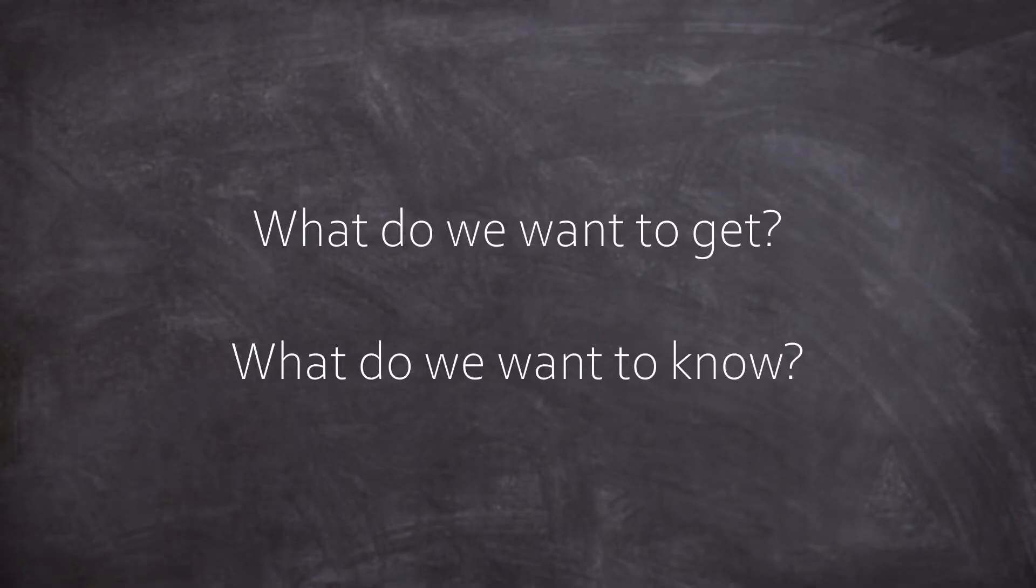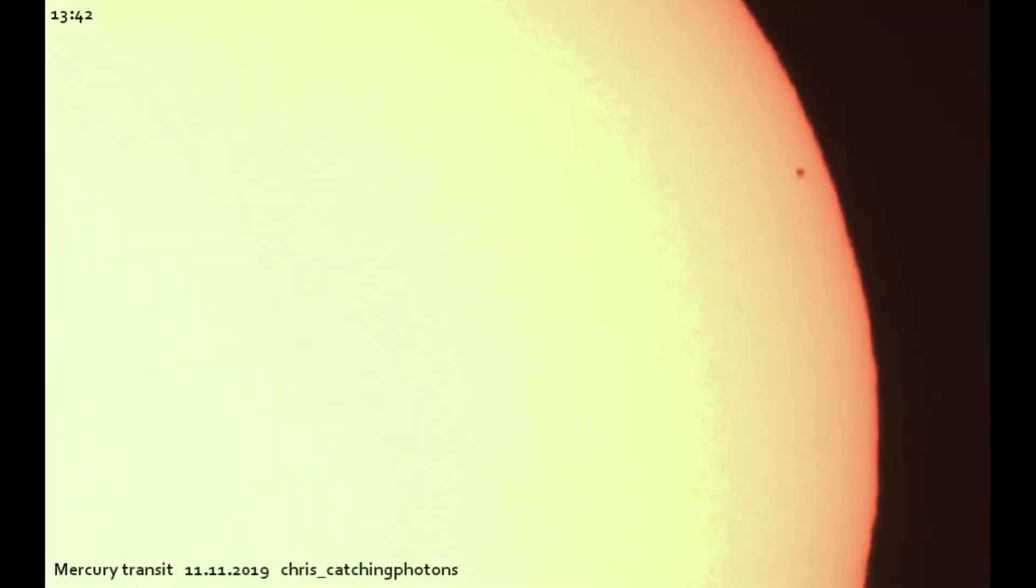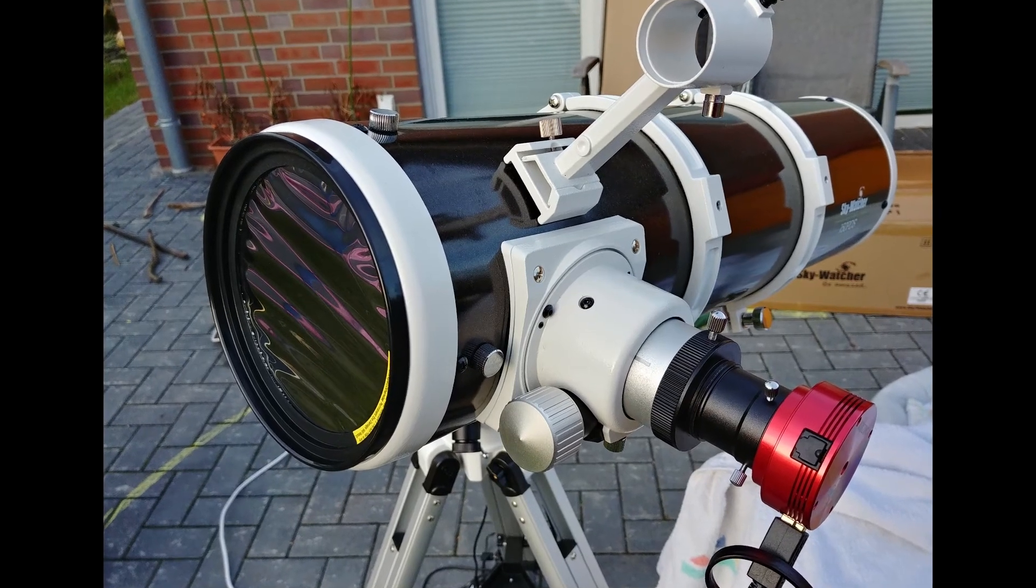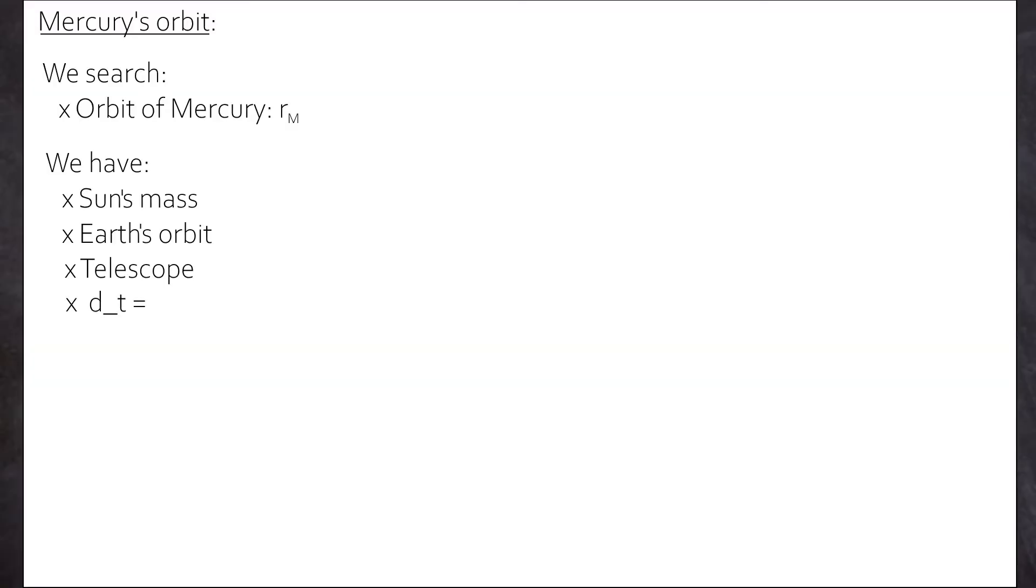What do we want to get? And what do we want to know? We want to calculate the orbit of Mercury. That means for us, the distance to the sun, the radius of its orbit. And we call it RM. So what do we have? We have different images of Mercury, taken at different but known times, T1, T2, etc. We have my optical setup, meaning my telescope, and everything that I can calculate from this. And we assume we know everything else, like the sun's mass, the radius of Earth's orbit. That's fair. They knew this property back then too.